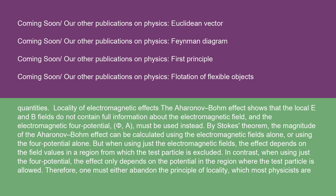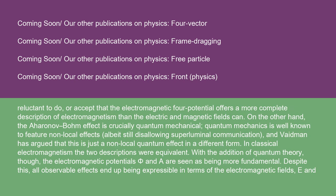Locality of electromagnetic effects: The Aharonov-Bohm effect shows that the local E and B fields do not contain full information about the electromagnetic field, and the electromagnetic four-potential (Φ, A) must be used instead. By Stokes' theorem, the magnitude of the Aharonov-Bohm effect can be calculated using the electromagnetic fields alone, or using the four-potential alone. But when using just the electromagnetic fields, the effect depends on the field values in a region from which the test particle is excluded. In contrast, when using just the four-potential, the effect only depends on the potential in the region where the test particle is allowed. Therefore, one must either abandon the principle of locality, which most physicists are reluctant to do, or accept that the electromagnetic four-potential offers a more complete description of electromagnetism than the electric and magnetic fields can.